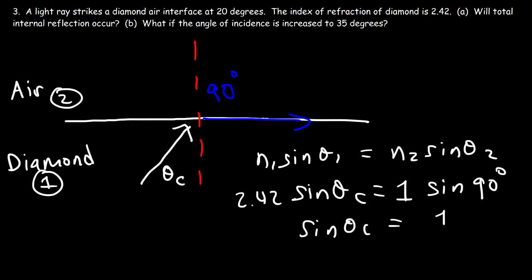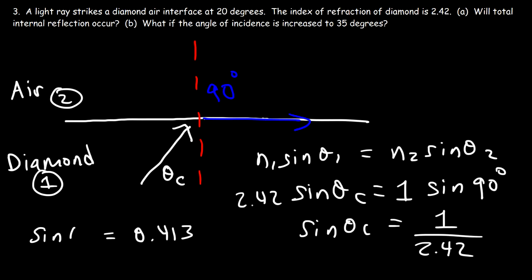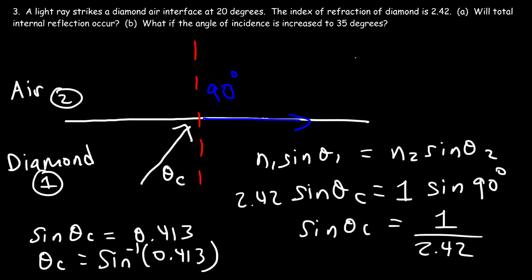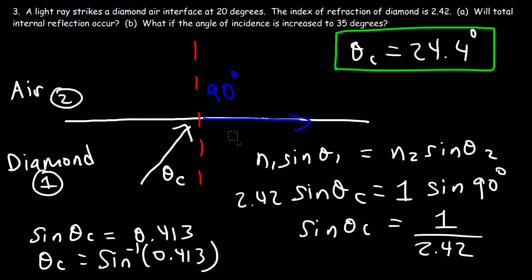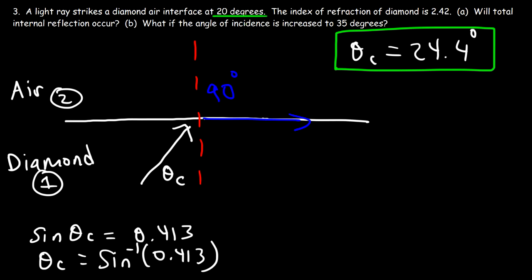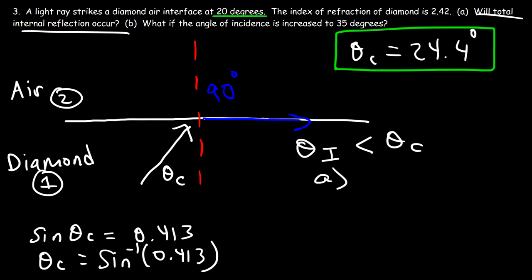Sine 90 is 1, so we divide both sides by 2.42. One divided by 2.42 is 0.413, which equals sine of the critical angle. The critical angle is arc sine of 0.413, which gives 24.4 degrees. Now we compare the angle of incidence to the critical angle. In part a, the incident angle is 20 degrees. Because the incident angle is less than the critical angle of 24.4°, total internal reflection will not occur. The answer for part a is no.